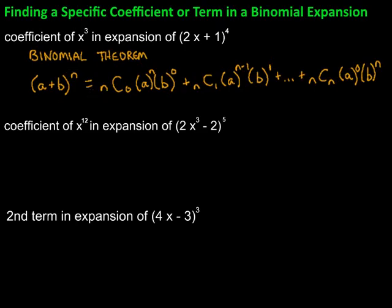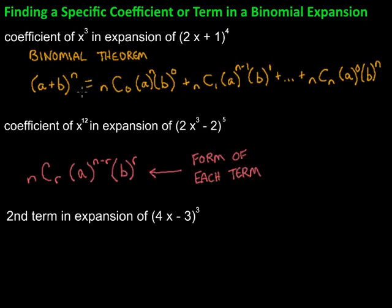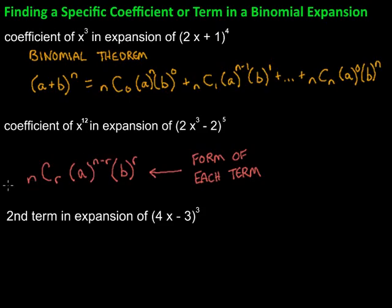Because of that fact, in general, each term in the binomial theorem looks like this, where we have nCr, and we have our a and our b. The r corresponds to the exponent on b — that 0, 1, and so on up to n. And this term is just finding what the difference is so that the two exponents add up to n. We can use that to come up with the coefficients or the entire term.